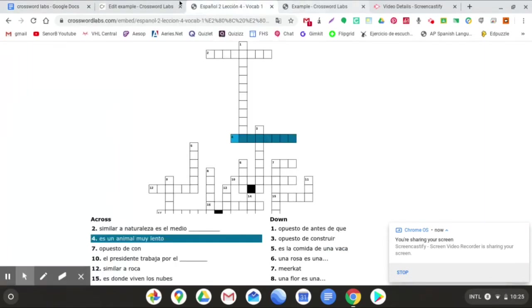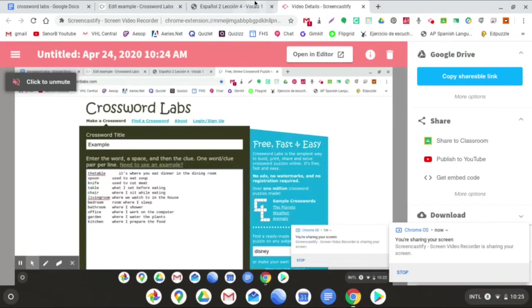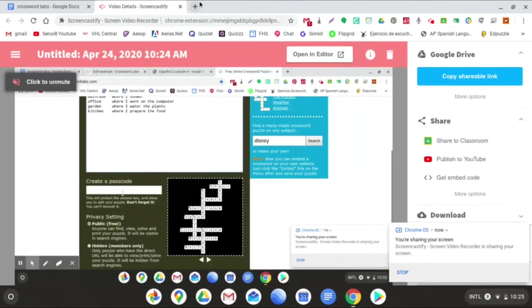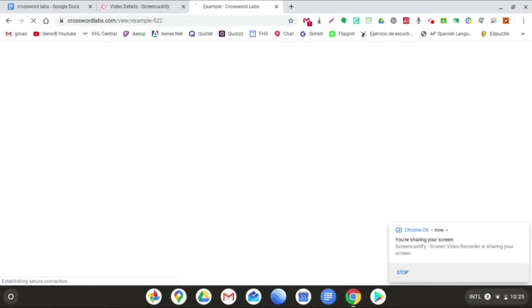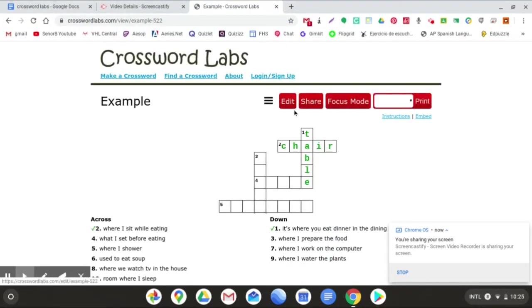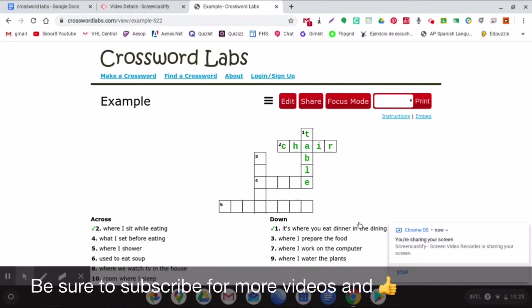It's also a good idea to keep this URL right here because this URL, like if I copy it, now I'm going to close out this window right here. And let's close out this window. I'm just going to close out all my crossword labs windows. I'm going to put that link back in here. The reason you want to get that link is because that's the link that will allow you to go back and edit it if you later find out that you've made a mistake.